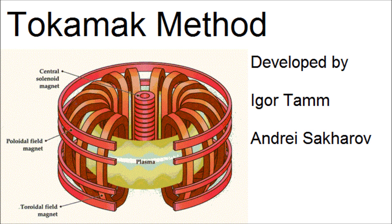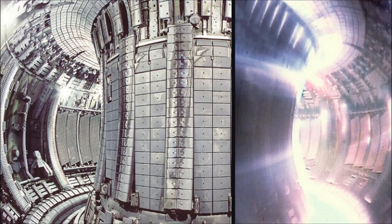The most widely used method for confining a plasma for fusion is the tokamak method, developed by Russian scientists Igor Tamm and Andrey Sakharov, which involves a torus-shaped metal container with electromagnetic wires all around it. Estimates have placed the date of arrival of the nuclear fusion reactor sometime in 2022, but the estimates could change.